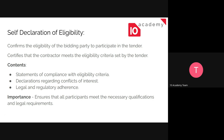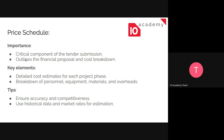It's an important document you need to check. The price schedule is for you to use in order to estimate or forecast the future budget. Its importance is that it outlines the financial proposal and cost breakdown. The key elements are detailed cost estimates for each project phase, and a breakdown for everything from personnel, equipment, material, and overhead. You can use historical data and market rates for estimation and forecasting, as discussed in the project introduction. Just ensure that it's accurate and competitive when submitting your bid.